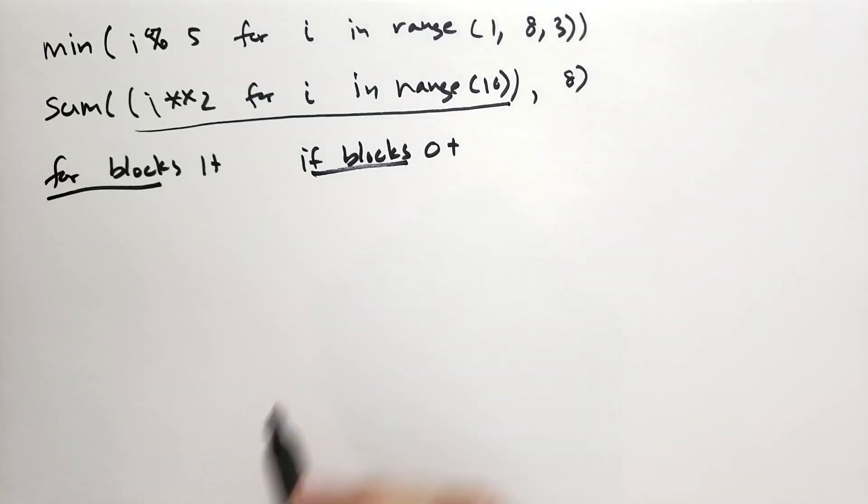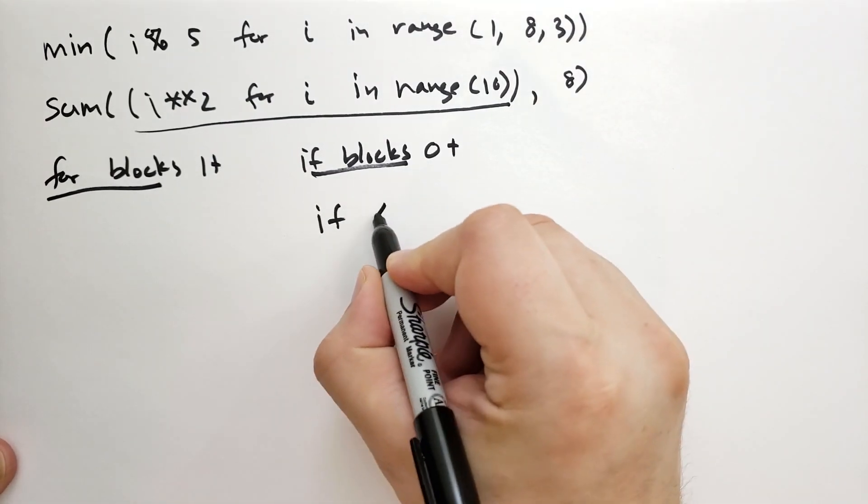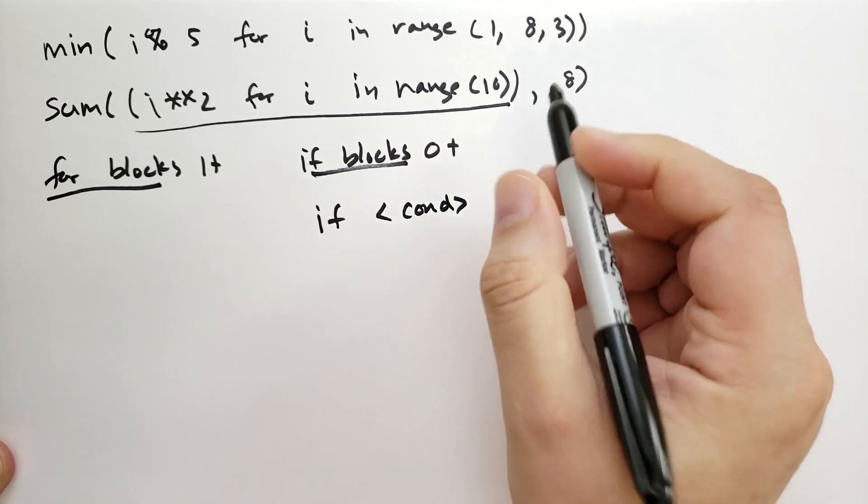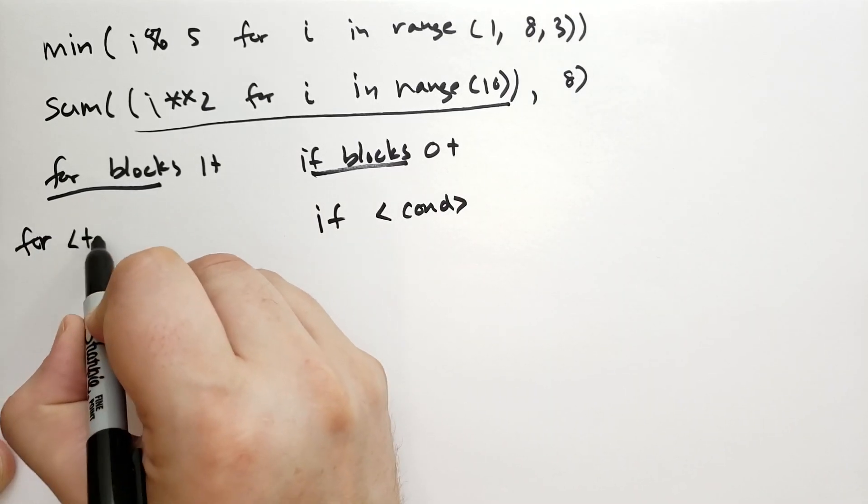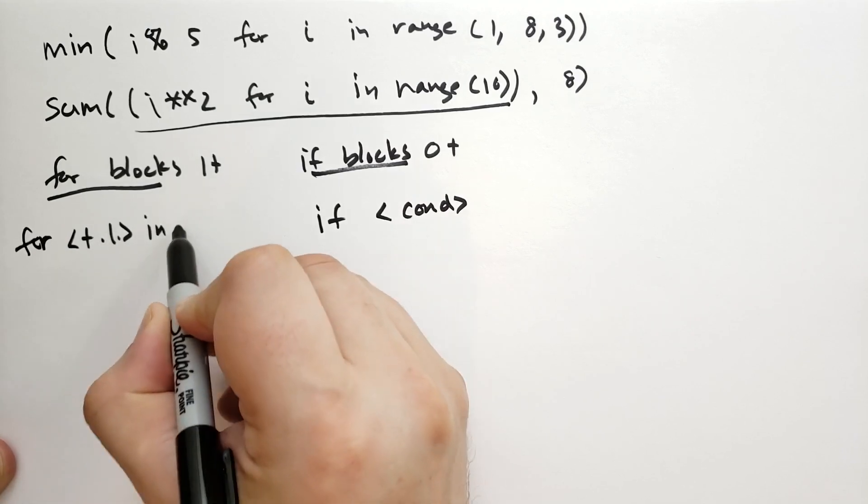An if block is just if and then some condition. And a for block looks like the first line of a for statement. So you have for target list and some expression.